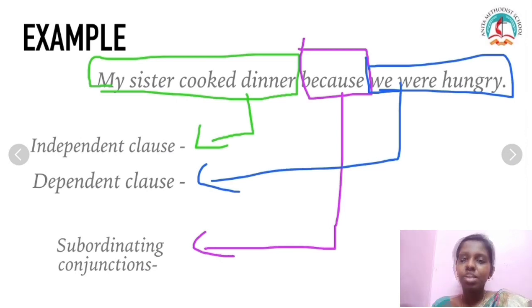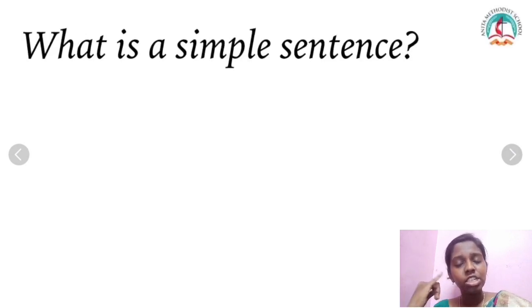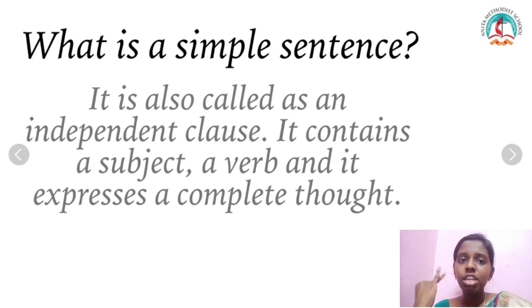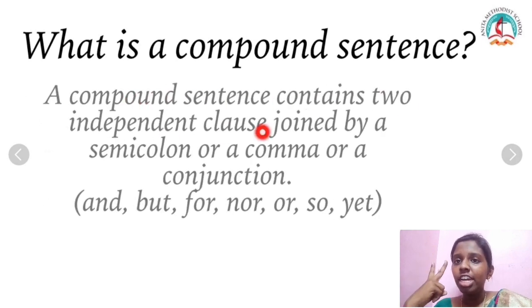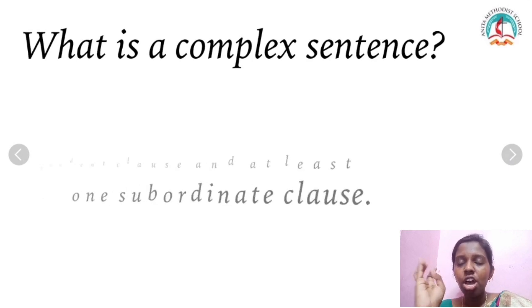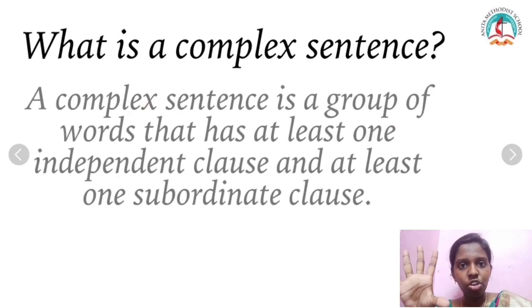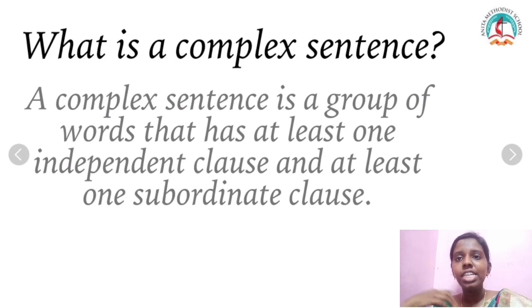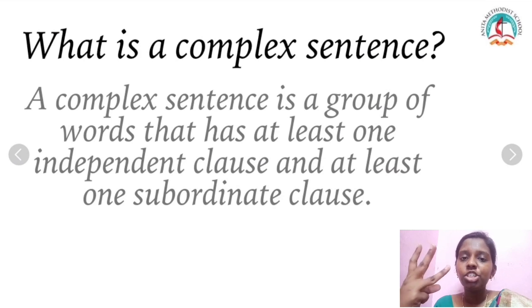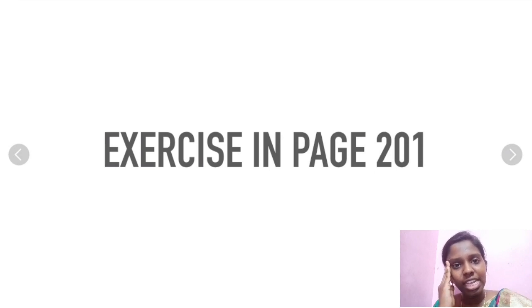Quick recap: A simple sentence is also called an independent clause — it has a subject, a verb, and expresses a complete thought. A compound sentence contains at least two independent clauses joined by a semicolon, comma, or conjunction. A complex sentence has at least one independent clause and at least one subordinating clause connected with a conjunction. Practice the exercise on page 201 to reinforce your understanding.